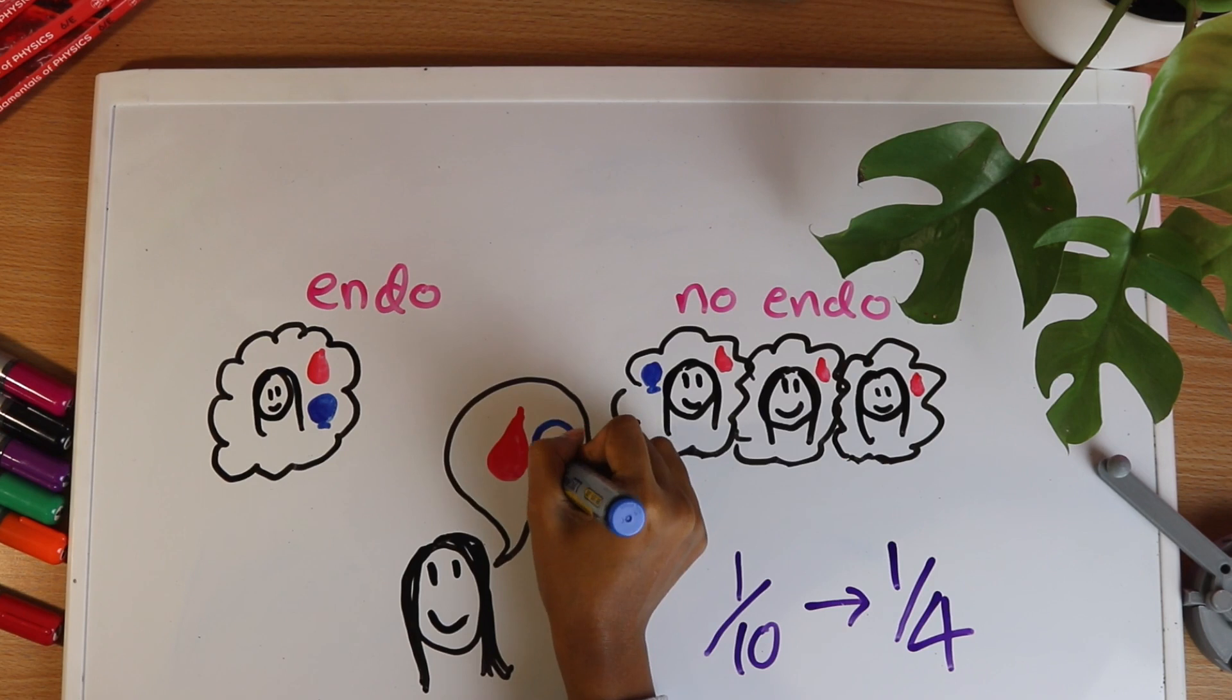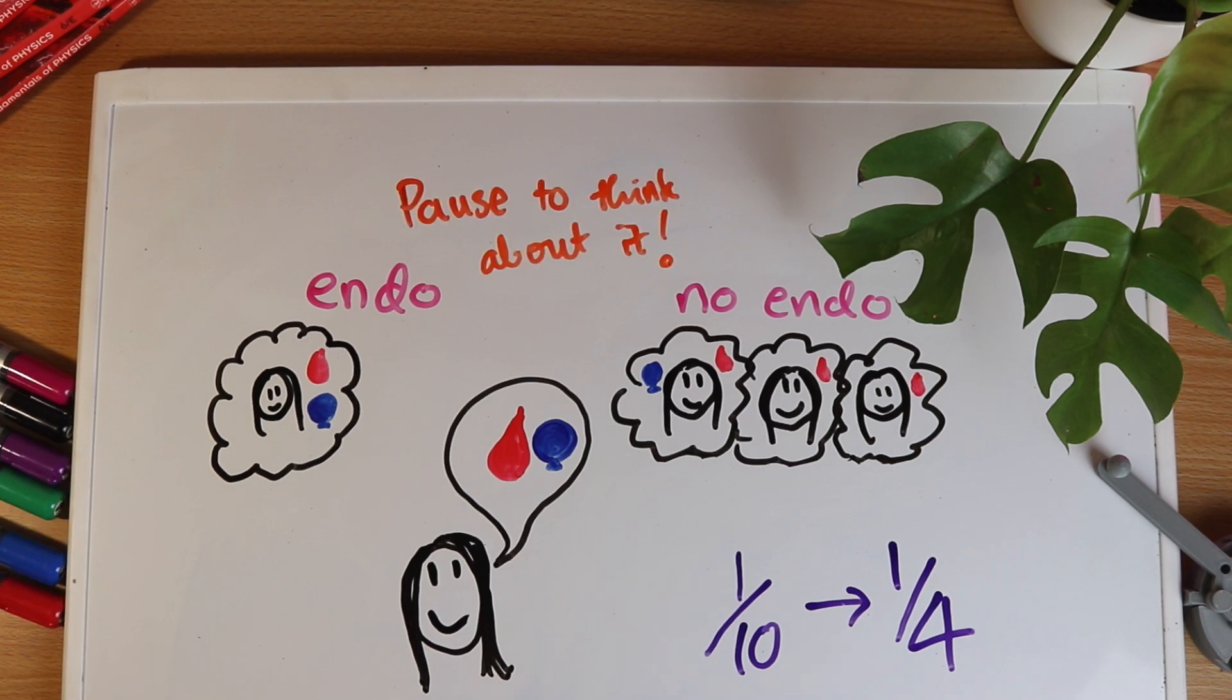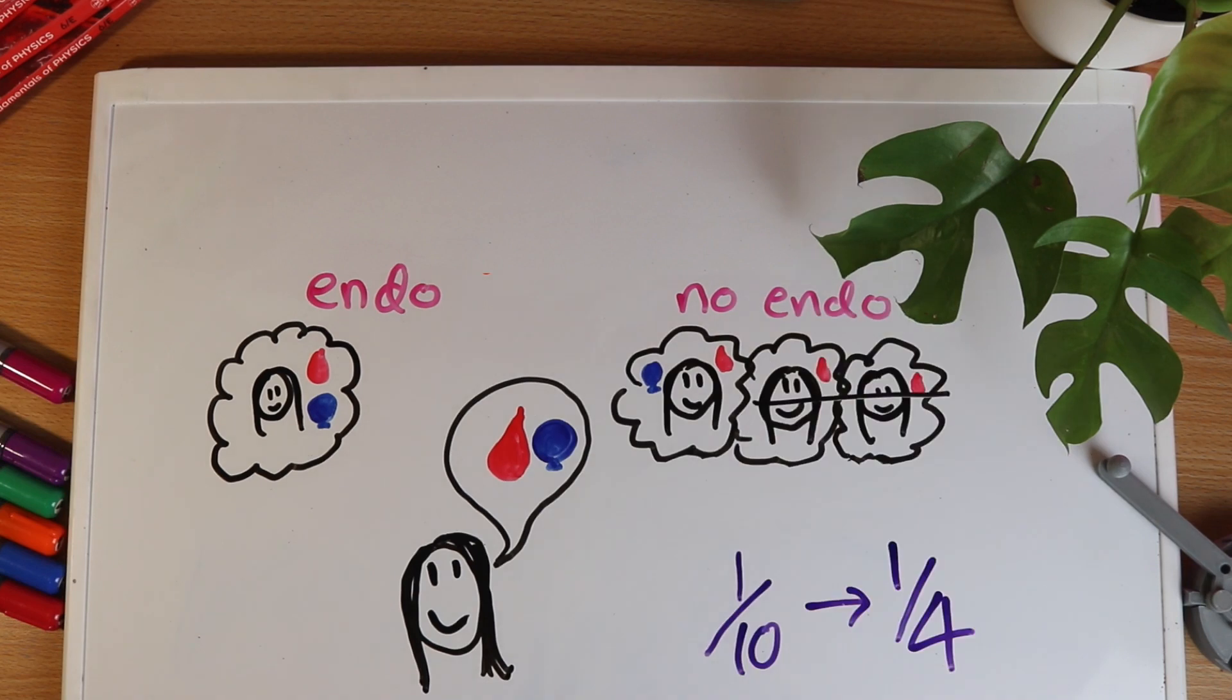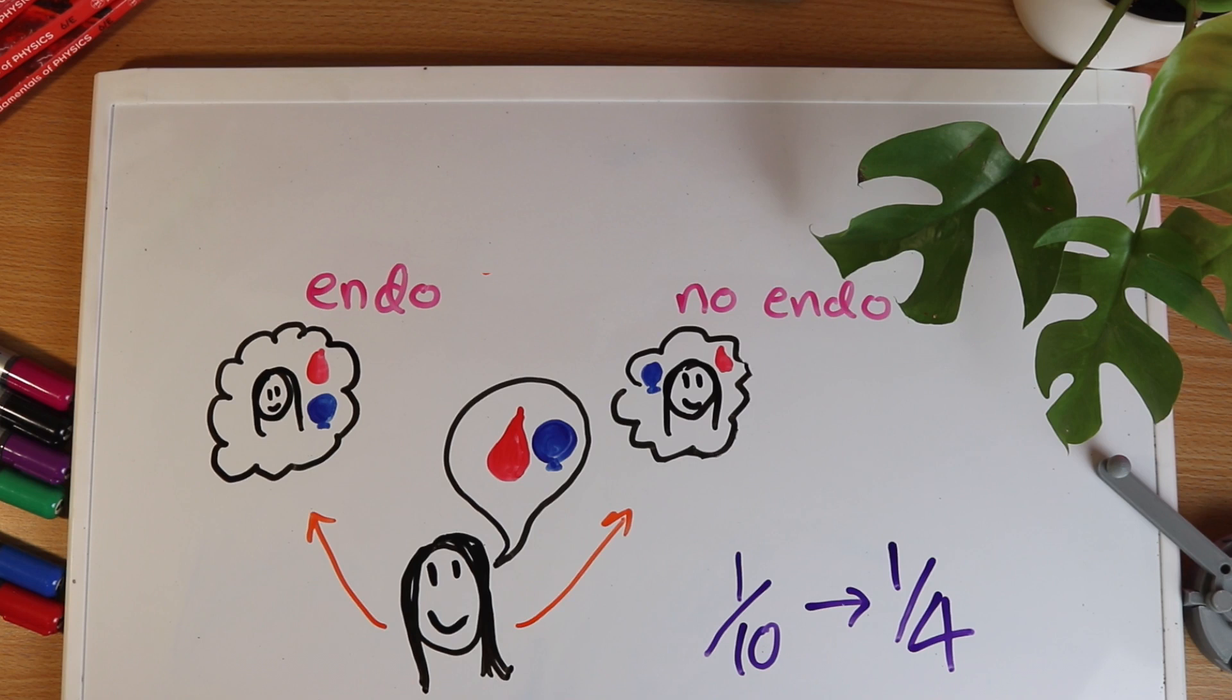Now if someone tells you that they have both heavy periods and bloating what's the probability that they have endo? Well they can't be one of these two since they don't have both of those symptoms. They must be either this person with endo or this person without. So the probability that they have endometriosis is a half.